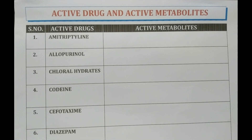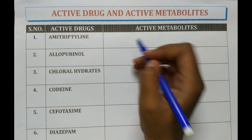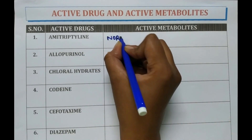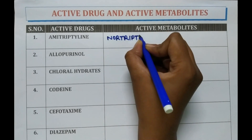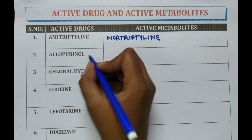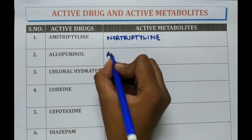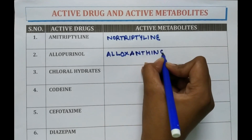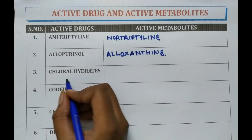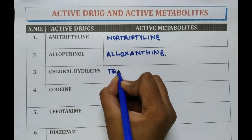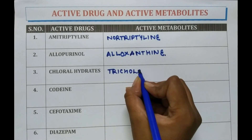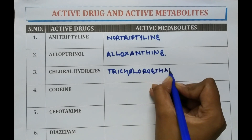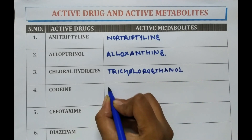Amitriptyline is an active drug with its active metabolite nortriptyline. Allopurinol is converted into alloxanthine in the body after its metabolism. Chloral hydrate is converted into trichloroethanol. Codeine is converted into morphine.